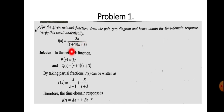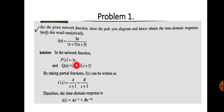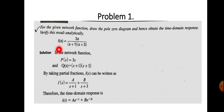The network function I(s) is in the form of a rational function, P(s) divided by Q(s), where P(s) is the numerator polynomial and Q(s) is the denominator polynomial. Here the numerator polynomial is 3s, so P(s) = 3s. The zeros are the roots of the numerator, so the zero value is s = 0, meaning I(s) becomes zero at that value.